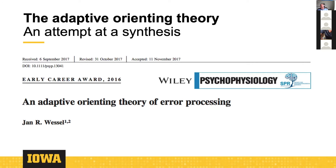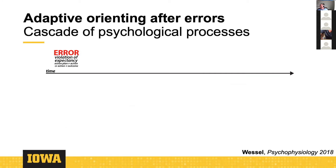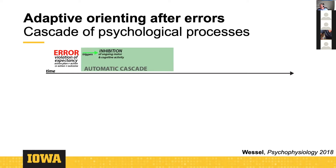The idea goes back to the fact that an error is just a specific example of a violation of expectancy — it's an unexpected event. Either you made an action plan that didn't map onto the action you actually performed, or you performed the correct action but didn't get the outcome you wanted. At the core of the theory is that any violation of expectation triggers an automatic cascade starting with broad, non-selective inhibition of both motor and cognitive activity.